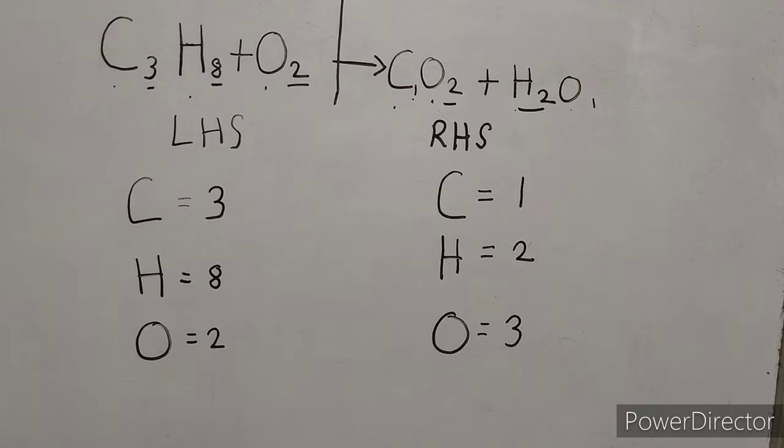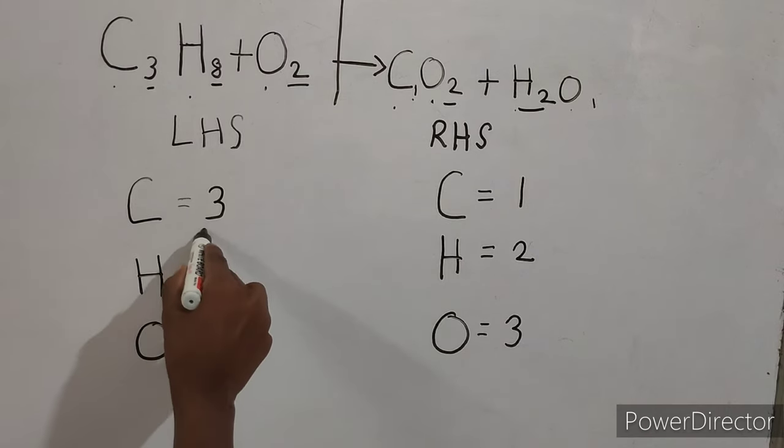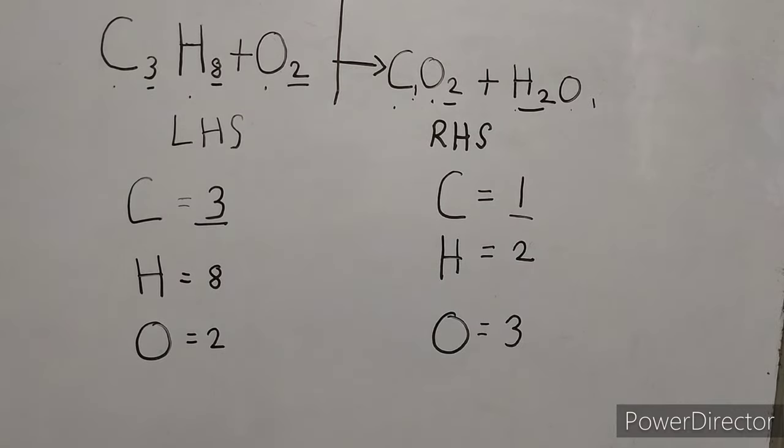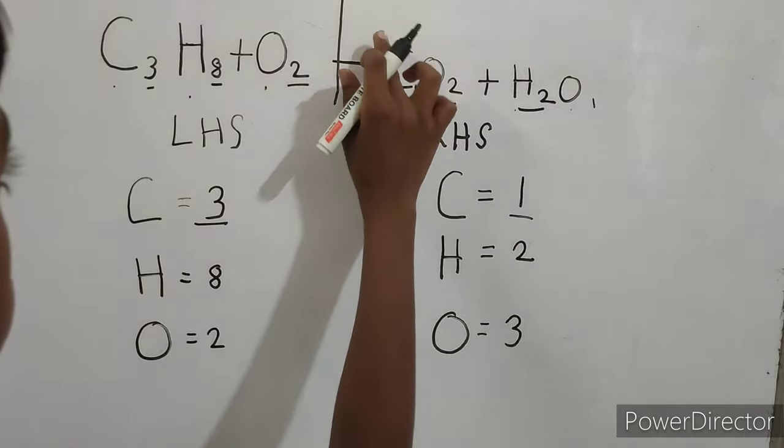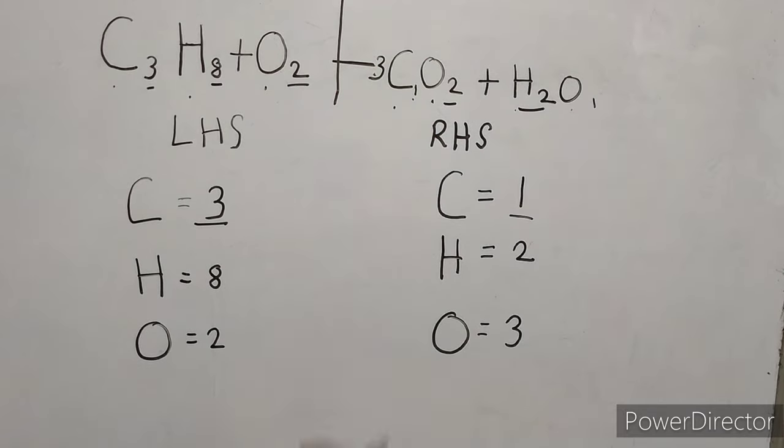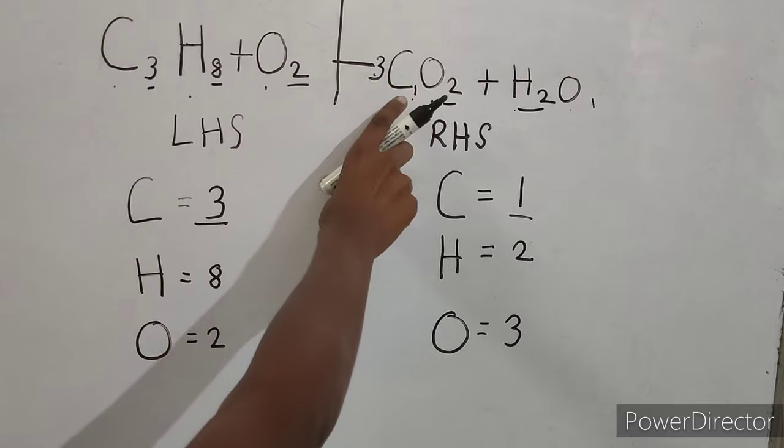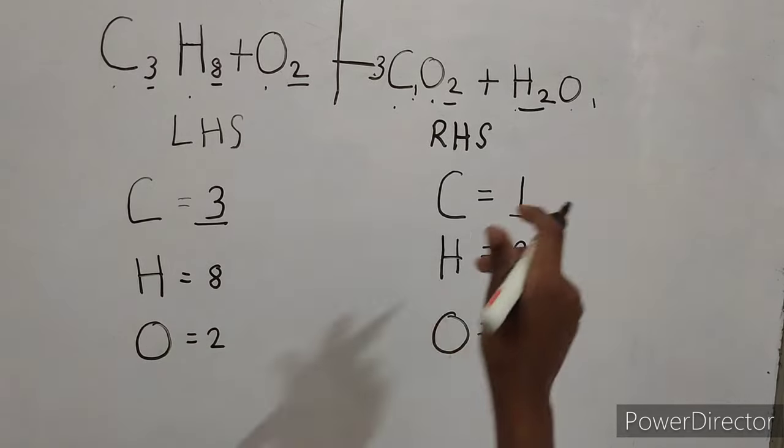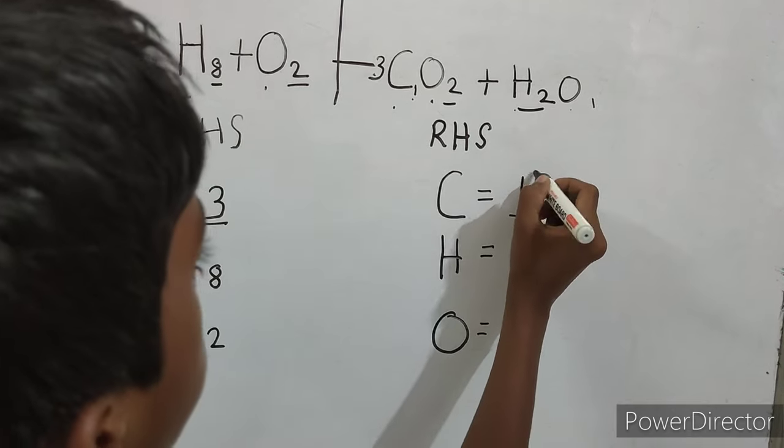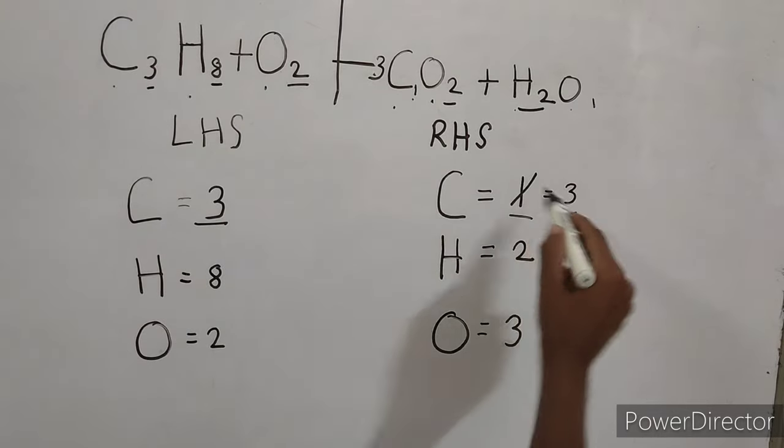So now let's start balancing the equation. Carbon here is 3, here it is 1. So we have to make this 1 into 3. Carbon is here, so we can write 3 here so that 3 times 1 equals 3. So we can change this 1 into 3. Now these both are balanced.